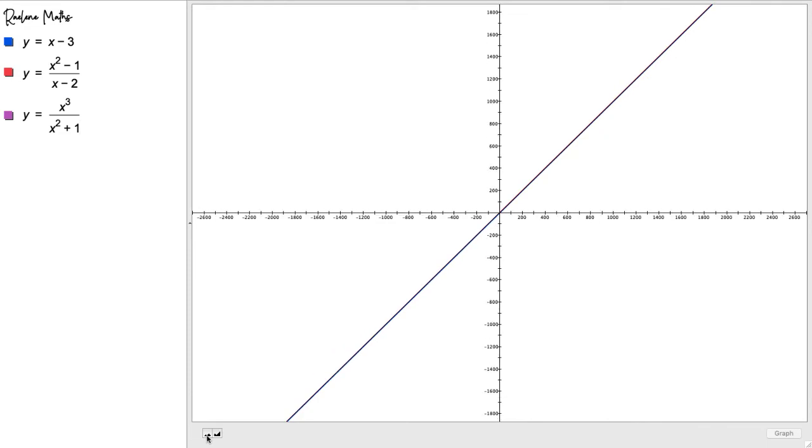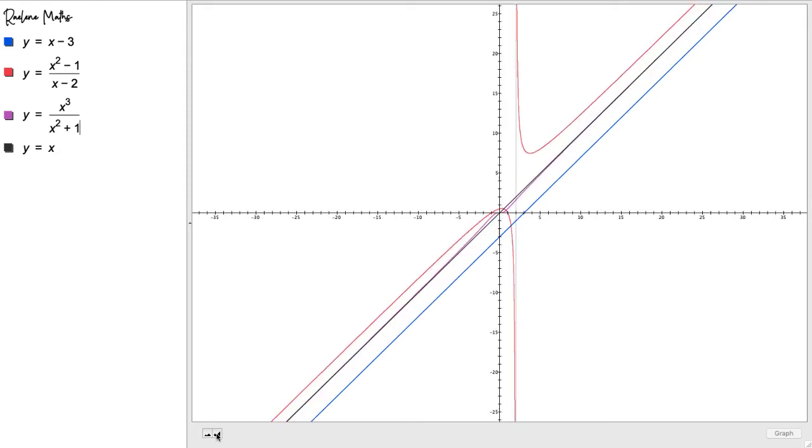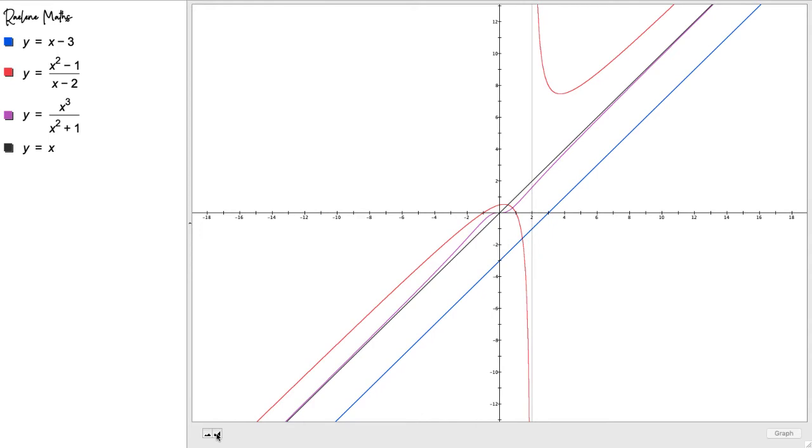This is called the zoomed-out or the asymptotic behavior. As x approaches positive infinity or negative infinity, each graph approaches the curve y equals x. This is the slant asymptote.